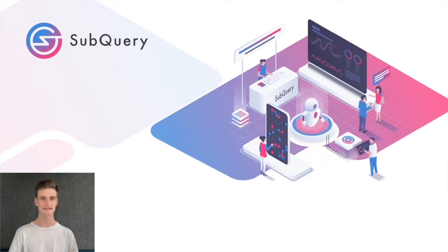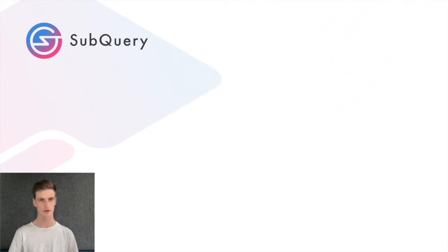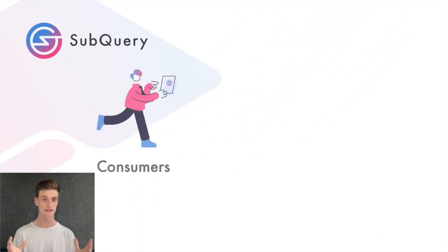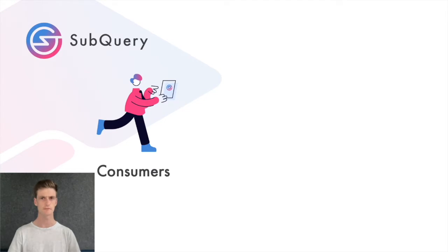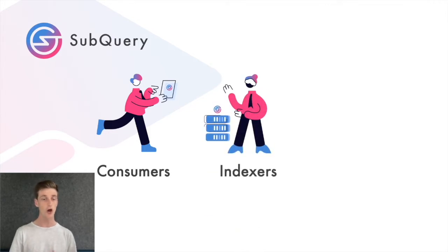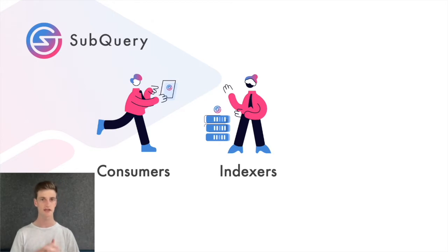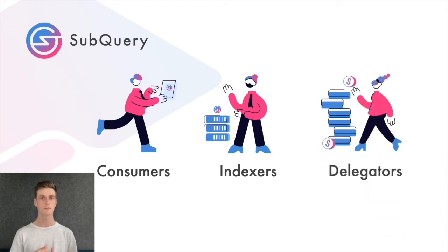There are three types of participants in the SubQuery network. Consumers will make requests to SubQuery for specific data and pay an advertised amount of SubQuery tokens. Indexers will host those SubQuery projects in their own infrastructure, running both the node and the query service to index data and answer GraphQL queries. And then finally, delegators will participate in the network by supporting their favourite indexers and earning rewards.